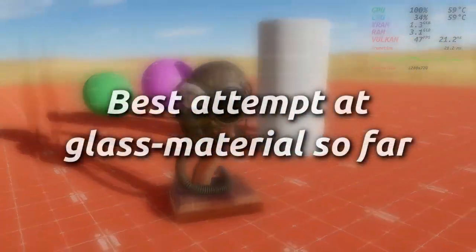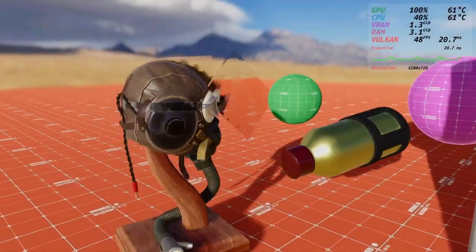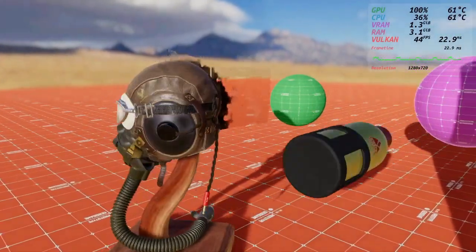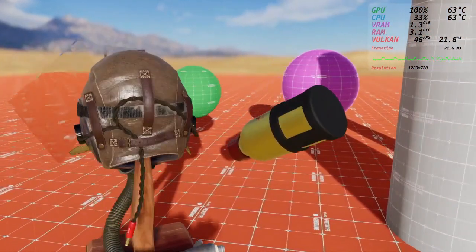This is my best attempt at the glass material in Godot Engine 4. While its documentation states that Order Independent Transparency, OIT for short, is not supported, I still wanted to give it a go.